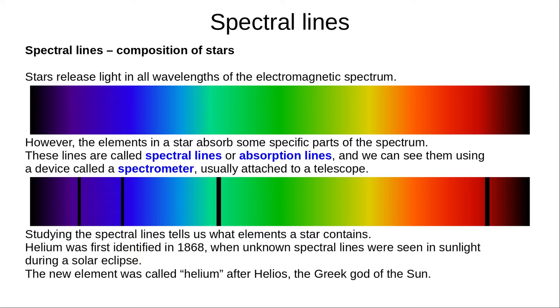These bands are called spectral lines, or absorption lines, and we can study them using a device called a spectrometer, usually attached to a telescope. We can study the spectral lines of elements and chemicals in labs on Earth, and compare them to the spectral lines in a star to find out what elements the star contains.